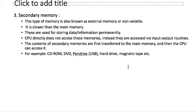Secondary memory is also known as external memory or non-volatile memory. It is permanent memory and slower than main memory. Data stored in a pen drive stays permanently until deleted. Examples include CD-ROM, DVD, pen drive, and hard drive.